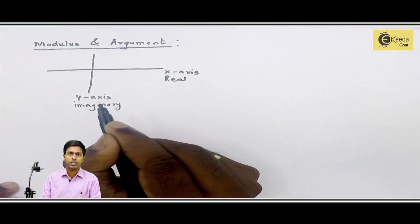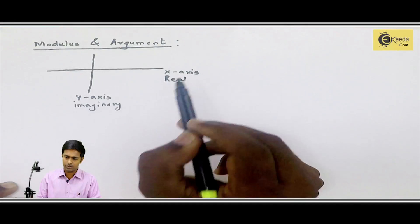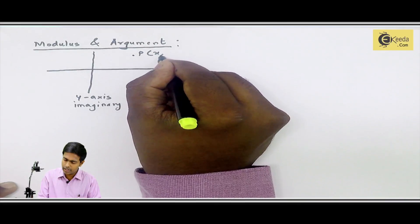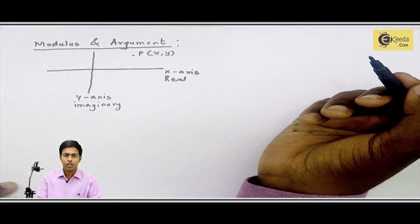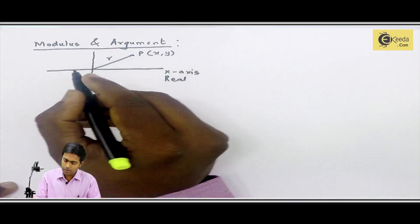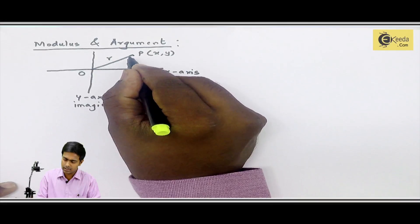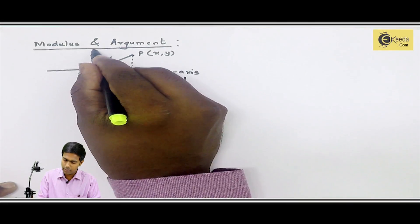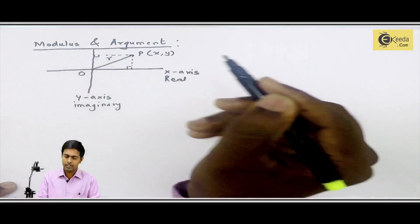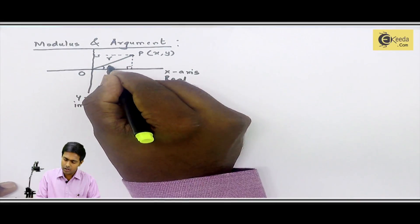We can represent any complex number as a point in this geometric representation. Let's say P is the point which has coordinates (x, y), and this point P is at a distance R from the center O. We can also draw perpendiculars on both axes — the real axis as well as the imaginary axis. Let's say this segment OP is making an angle of theta with the real axis.